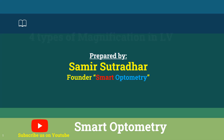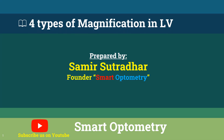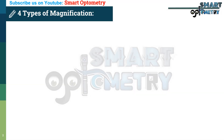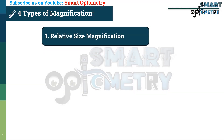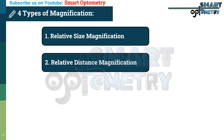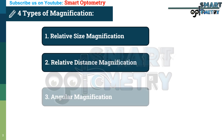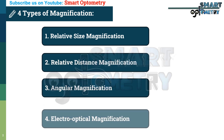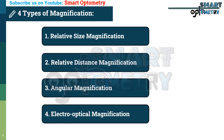Today I will discuss four types of magnification in low vision. The four types of magnifications are relative size magnification, relative distance magnification, angular magnification, and electro-optical magnification.